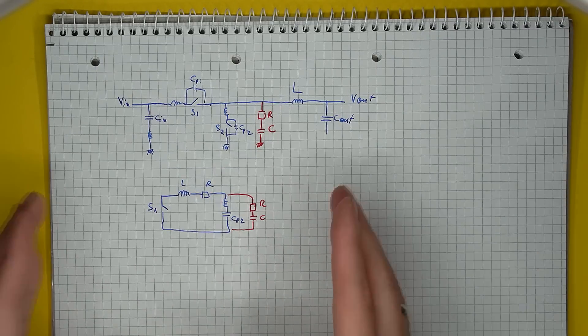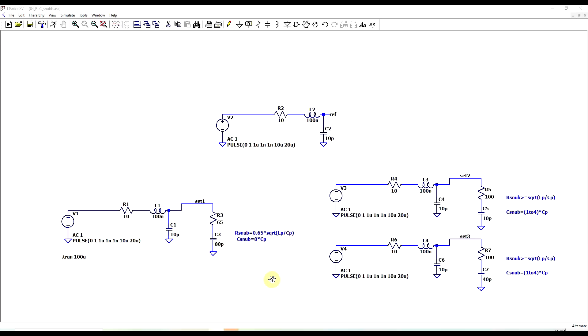Now there are multiple ways to calculate the needed values for a snubber, but these all require the knowledge of the parasitic inductance and capacitance.